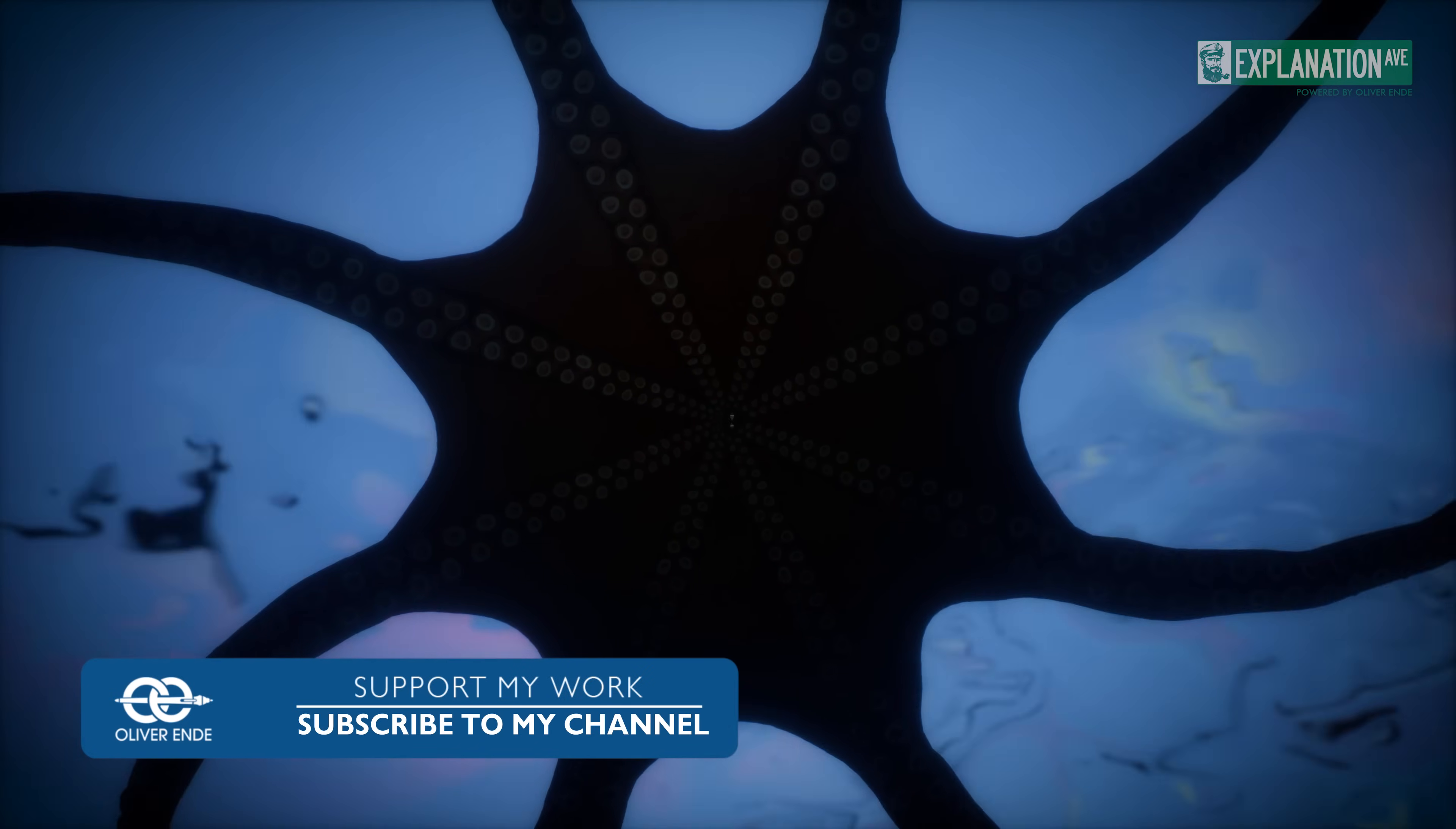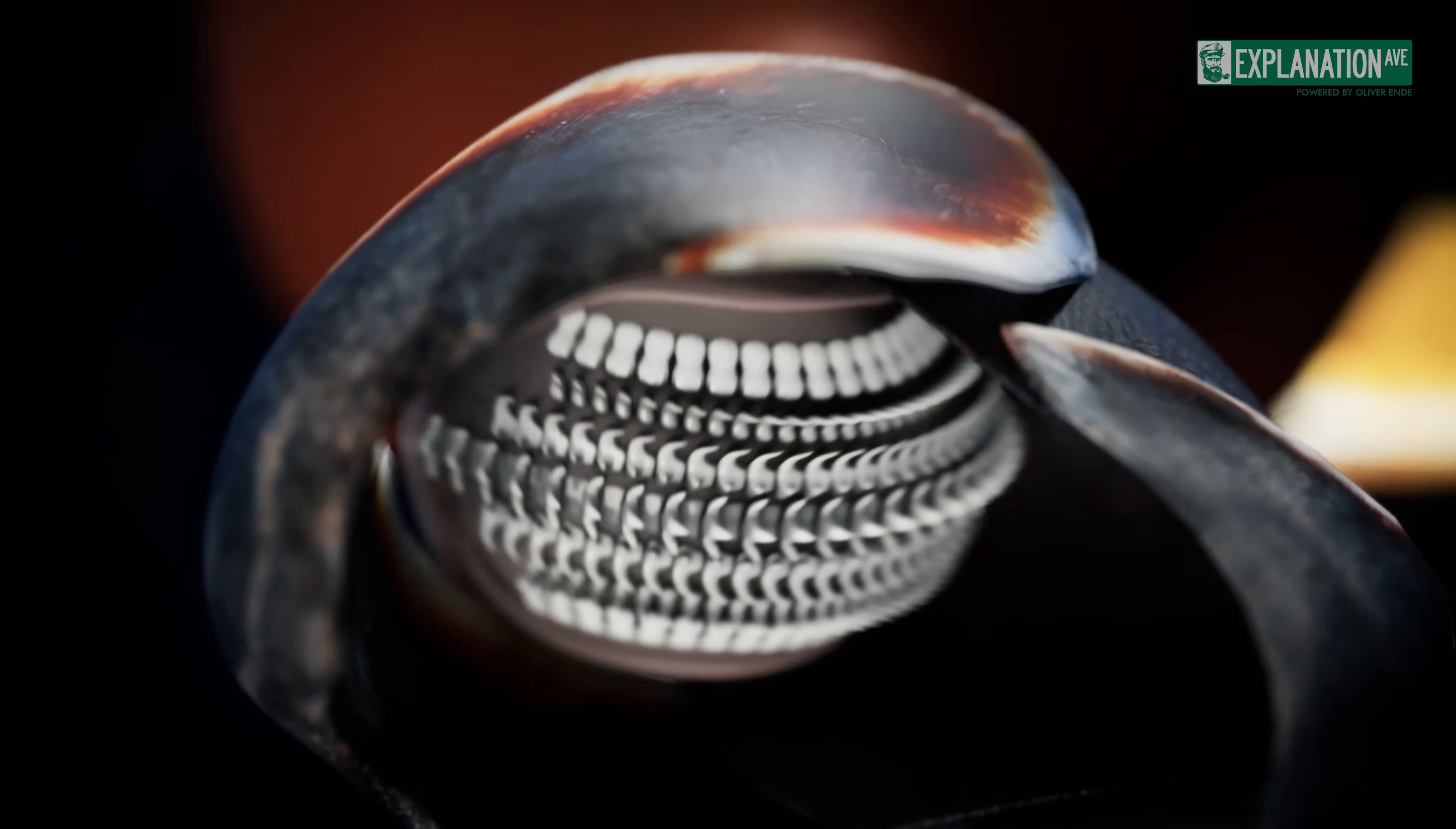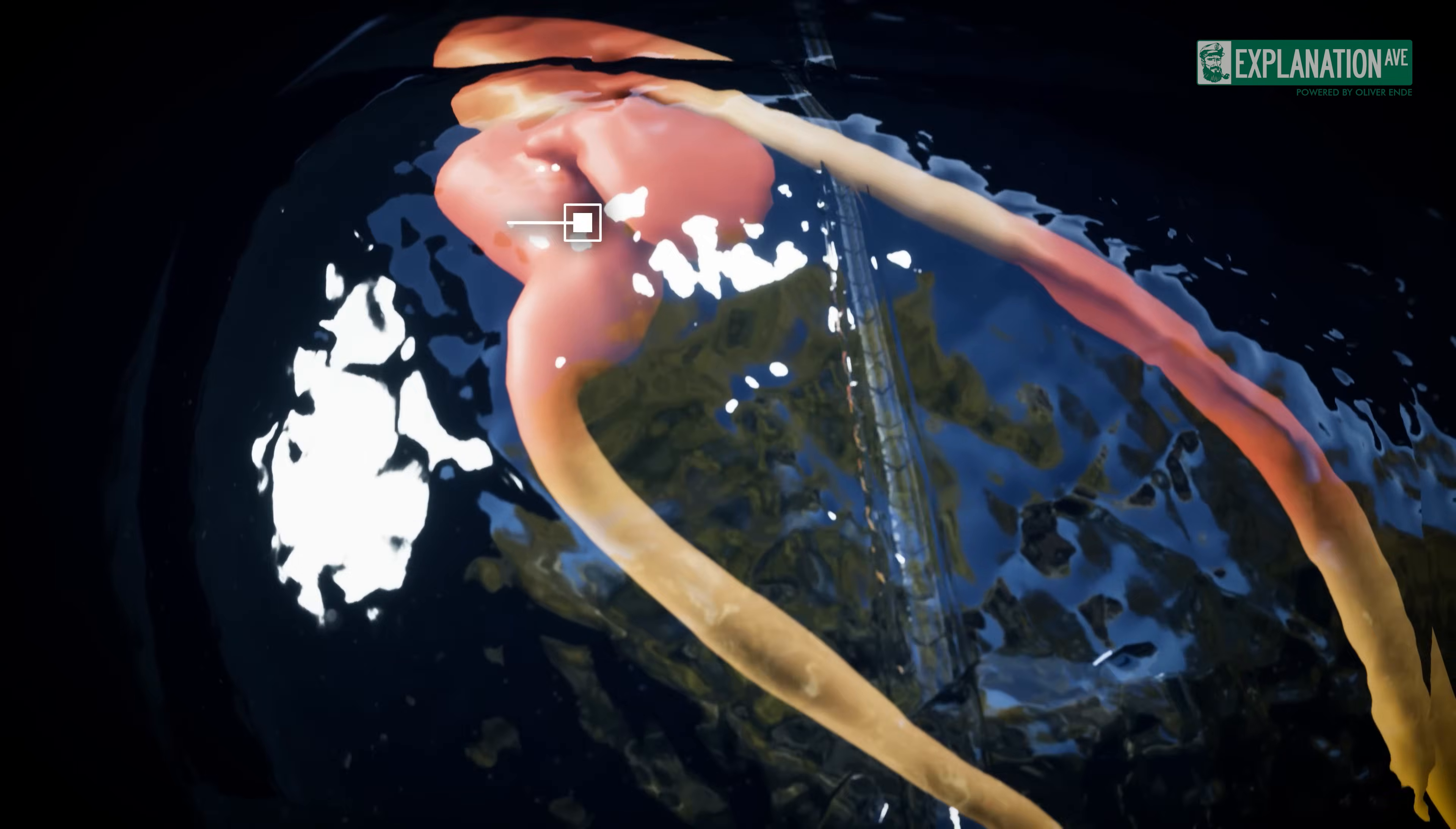The digestion of the octopus begins with its sharp beak. This is located at the lower end of the head and is surrounded by a soft horn substance. The beak is designed to crush and cut food. Below the beak is another organ called the radula, a kind of tongue that is covered with many small teeth and barbs. This organ is used to scrape and tear food. Once the food has been ingested, it enters the octopus's crop, where it is temporarily stored. From there, the food passes into the stomach, where it is broken down further with the help of acidic digestive enzymes.